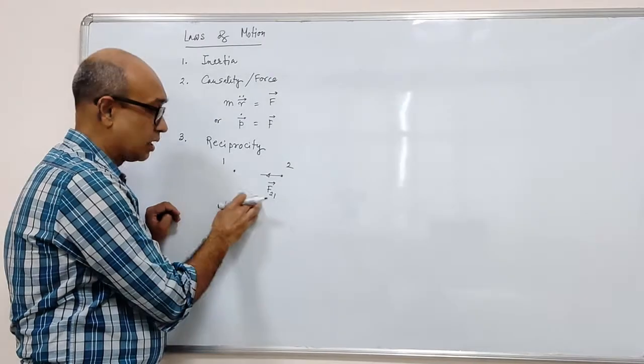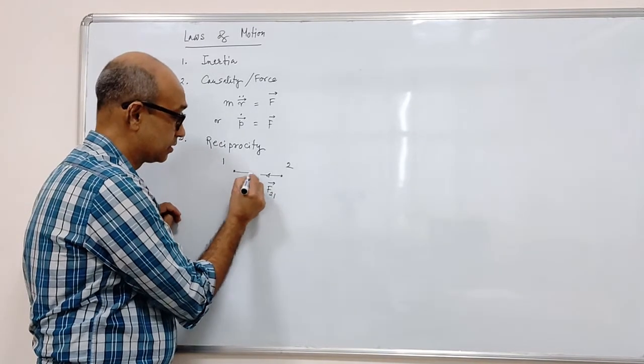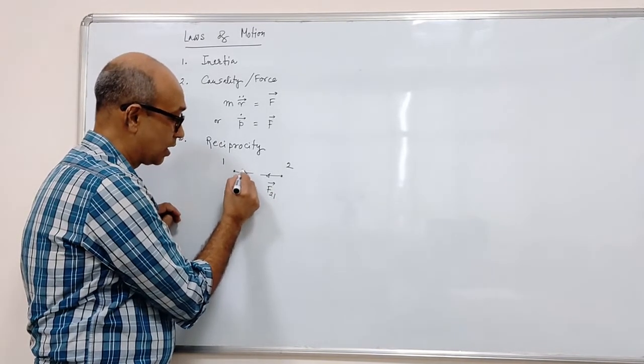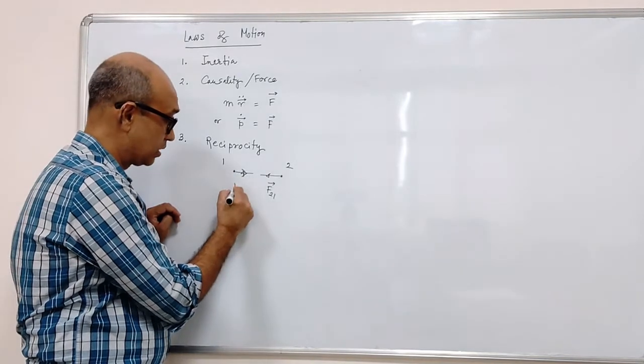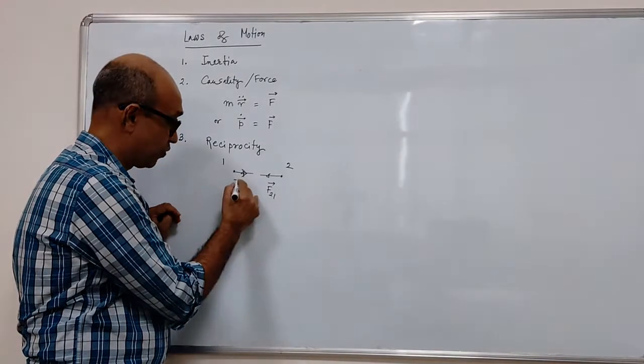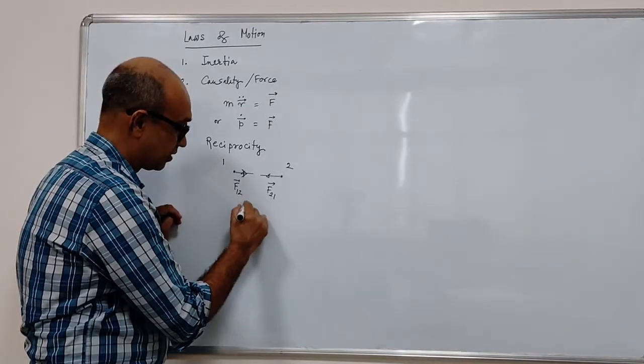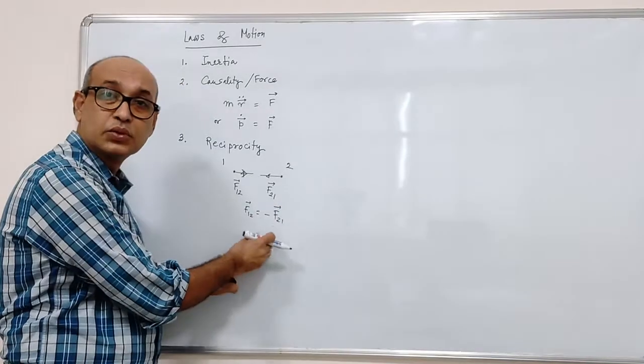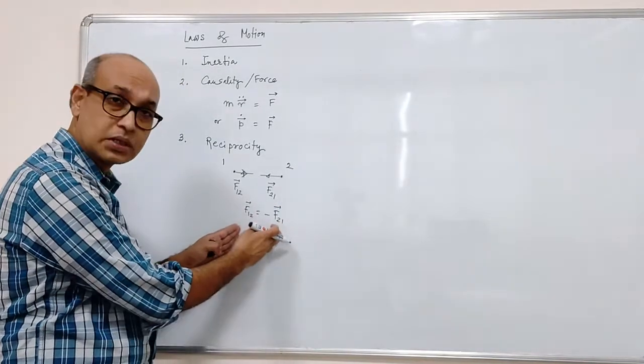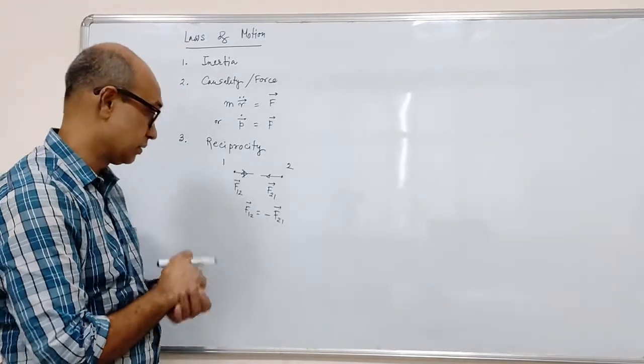If the first object applies the force on the second, then it feels, in turn, an equal and opposite reaction force. So we can denote that by F12. The law of reciprocity simply says that F12 should be F21 with a negative sign. So magnitudes are equal, the directions are exactly opposite of each other.